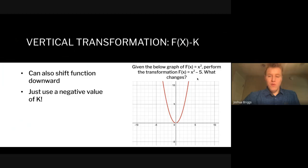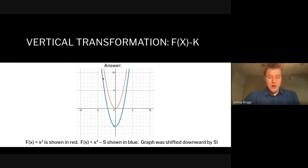Think about what this would look like if you performed this downward translation — maybe sketch it on a piece of paper. The result is simply a downward shift of the function by five. Whatever your value of k is — it could be 100, and then you're moving it down 100. The graph has stayed the same shape; we just simply shifted it down.